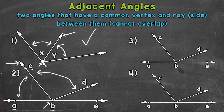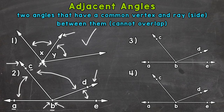We can also look at angle DBE, this angle right here. It would also be adjacent to angle DBC, because they share the vertex right here, and they also share this side or ray. So to recap number two: angles ABC and DBC are adjacent, and angles DBE and DBC are adjacent too.